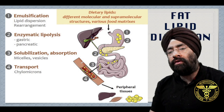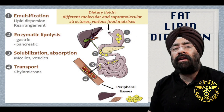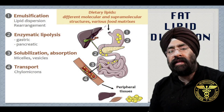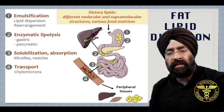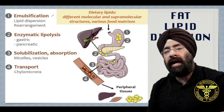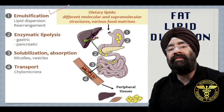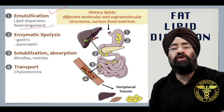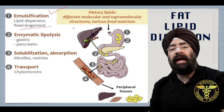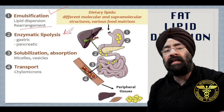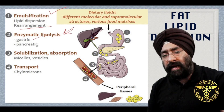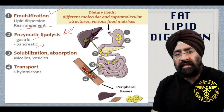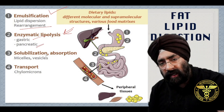So, what happens when you eat fat? Whatever you eat goes down through your food pipe to your stomach. First there is emulsification, lipid dispersion, and rearrangement. Then enzymes are added — lingual lipases in the saliva, gastric lipases in the stomach, and then pancreatic lipases — and these lipases break the fat down.